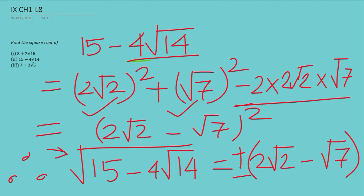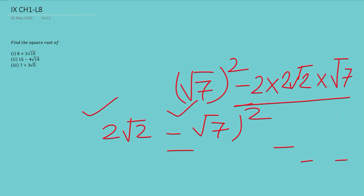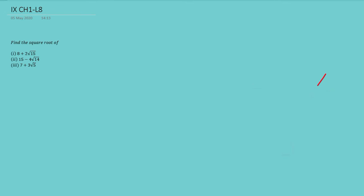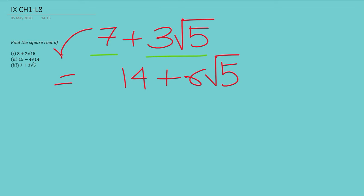Now in the third case we don't have a factor of 2. We have 7 + 3 root 5. Here the irrational part does not have a factor of 2. What do we do? It's quite simple — just multiply by 2, giving 14 + 6 root 5. But are these two expressions equal? No they are not, so we must compensate.